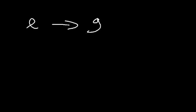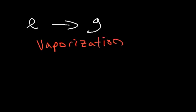Now what about going from a liquid to a gas — is it endothermic or exothermic? Think of liquid water: if you want to vaporize it into steam, do you need to add heat or remove heat? Vaporization — the process of converting a liquid into a gas — is always an endothermic process.